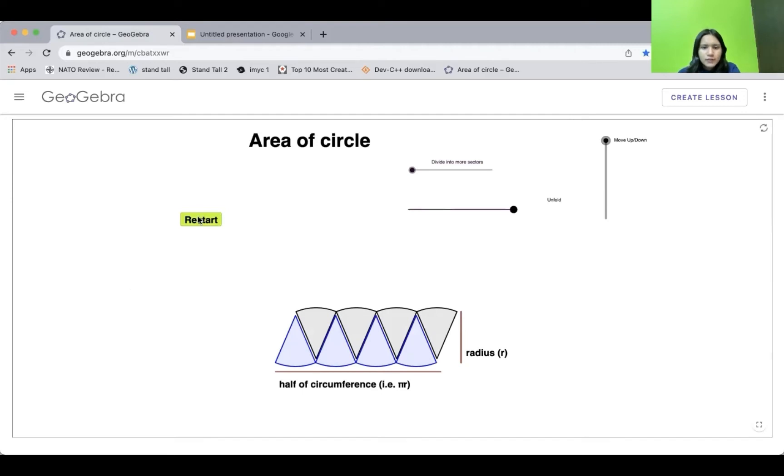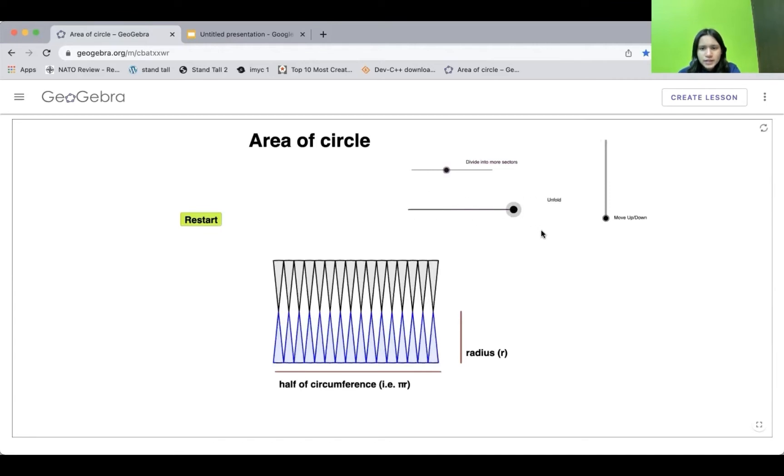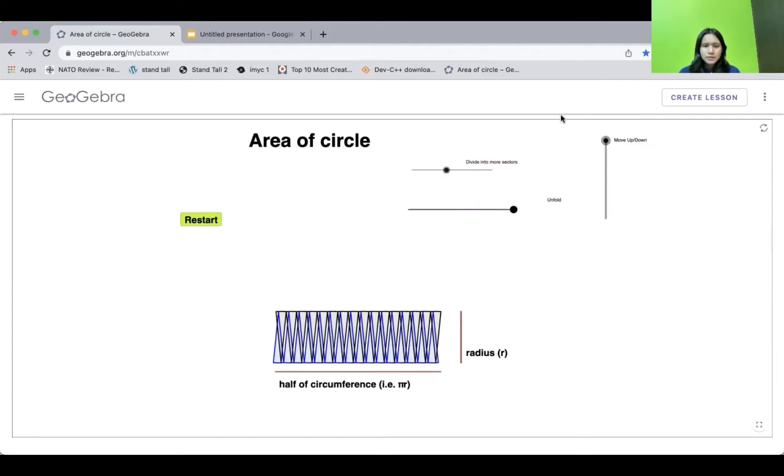Now when we divide the circle into more sectors like this, and unfold it and reassemble it, then yes. Now it looks like a parallelogram.